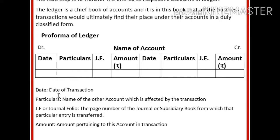In the date column, we mention the date of the transaction. In particulars, we write the name of the other account which is affected by the transaction, other than this account. In JF or journal folio, we write down the page number of the journal or subsidiary book from which that particular entry is being transferred. And in amount, we specify the amount pertaining to this account in this transaction.